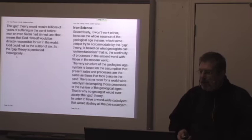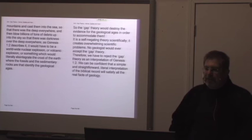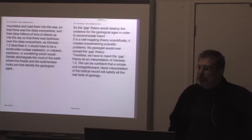But why would they believe some other? Why would Morris say that they can't believe in a cataclysm, therefore they couldn't believe in the gap theory when they truly do believe in a cataclysm? So another, he's not much on science either so far. That is why no geologist would ever accept the gap theory. In order to have a worldwide cataclysm that would destroy all the pre-cataclysm mountains and cast them into the sea so that there was the deep everywhere and then blow billions of tons of debris up into the sky so that there was darkness over the deep everywhere as Genesis 1:2 describes it, it would have to be a worldwide nuclear explosion or volcanic explosion or something which would literally disintegrate the crust of the earth where the fossils and the sedimentary rocks are that identify the geological ages.